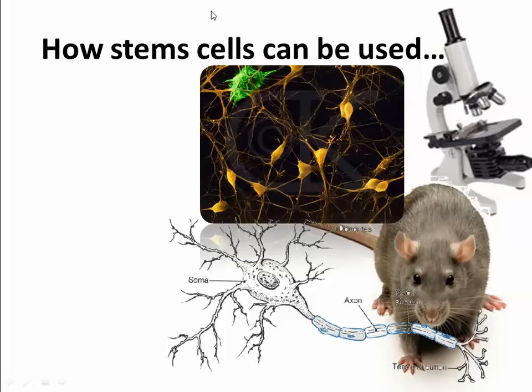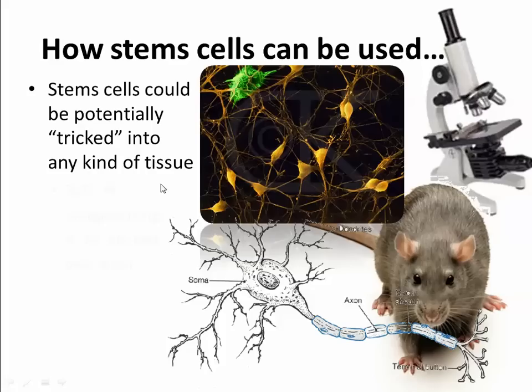You could trick a stem cell to turn into heart tissue, and then do several things with it. Maybe you could implant it on a heart to make it stronger, or you could test drugs on this tissue to see how pharmaceuticals actually affect heart tissue — without having to risk trying it on animals or real humans and finding out it's a fatal chemical.